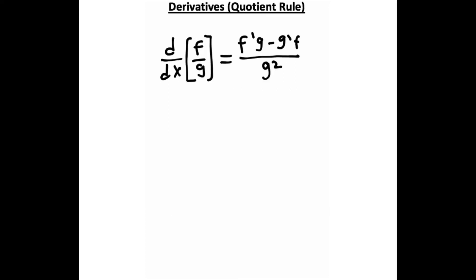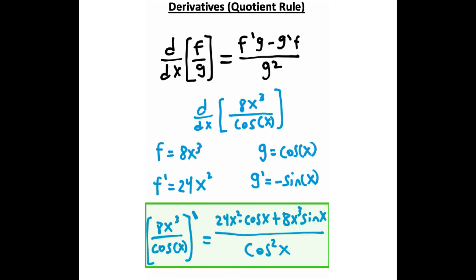The quotient rule works very similarly, and this happens when two terms are divided. All you have to do is find the corresponding derivatives and plug it into that formula. Here's a worked out example if you want to reference it.